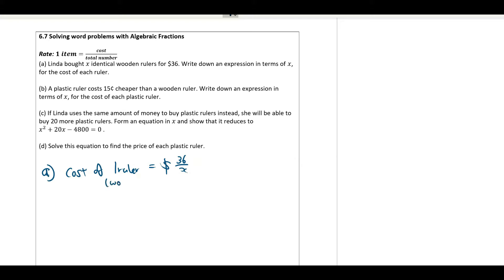So in this case, this is wooden. B, cost of one plastic ruler is equal to 36 over X minus 0.15 because they say that it is cheaper.